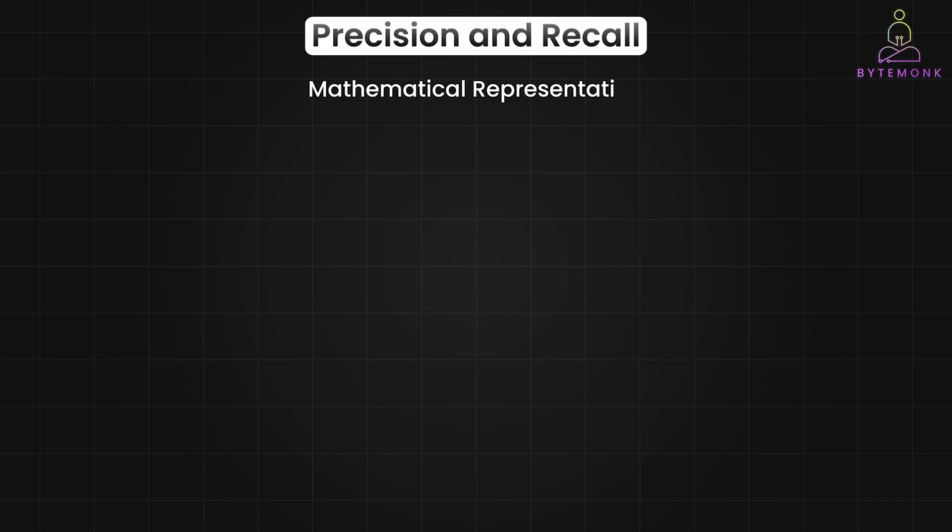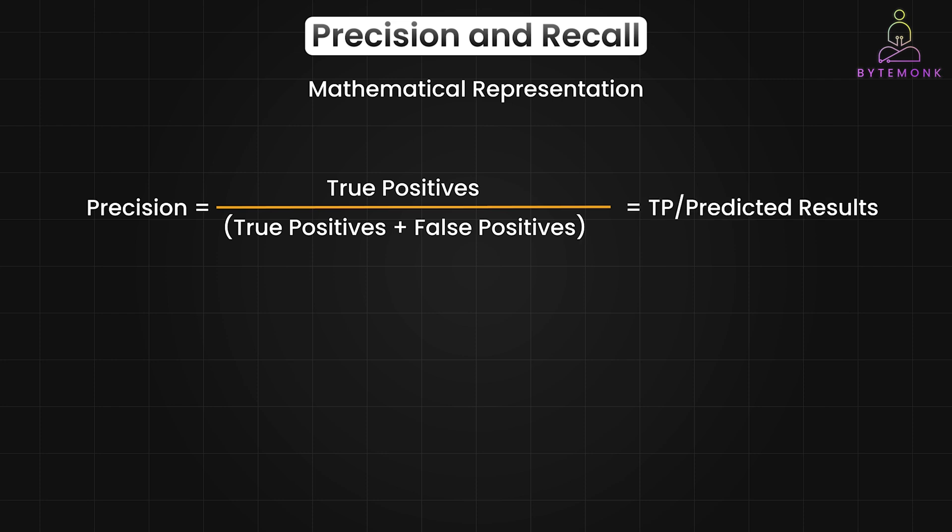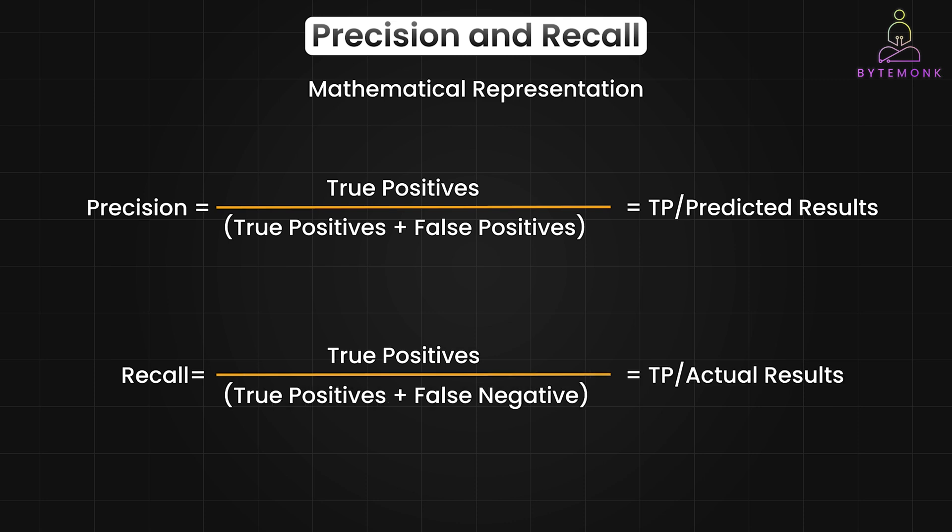In mathematical representation, precision is TP by TP plus FP or TP by predicted results. Similarly, recall is TP by TP plus FN or TP by actual results. Precision and recall are often a trade-off. You might be able to increase one, but it often comes at the cost of decreasing the other. The ideal model would have high precision and high recall, meaning it correctly identifies most of the relevant items without making too many false alarms.